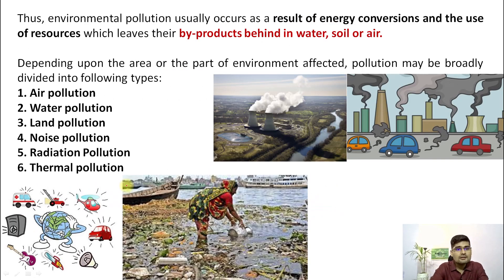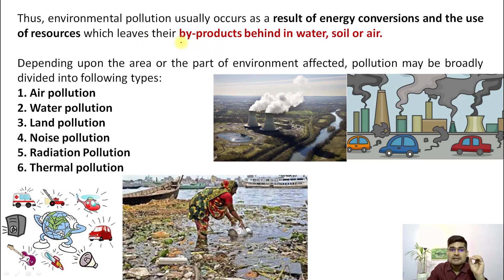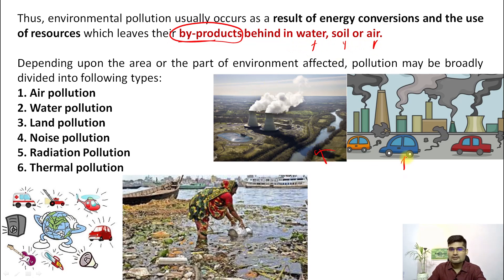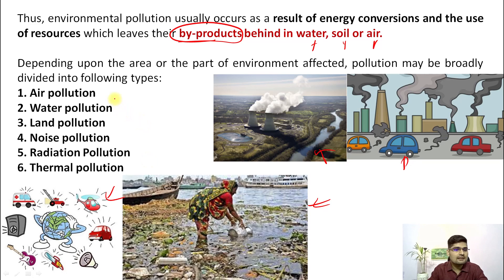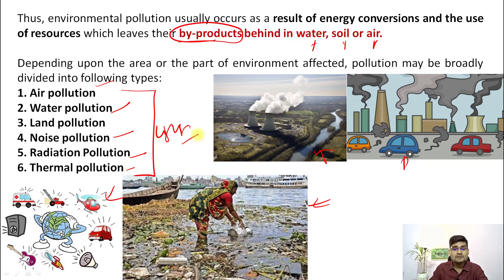Environmental pollution occurs as a result of energy conversions and use of resources which leave byproducts in water, soil, or air. Depending upon the part of environment affected, pollution may be broadly categorized. There are several kinds: air, water, land, noise, radiation, thermal, and also light pollution.